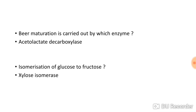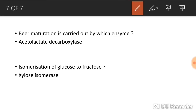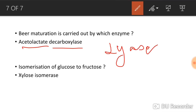The next question: beer maturation. Beer maturation is done by acetolactate decarboxylase, which belongs to the class lyases. This enzyme performs maturation of beer. Also, isomerization of glucose to fructose is another application in this context.